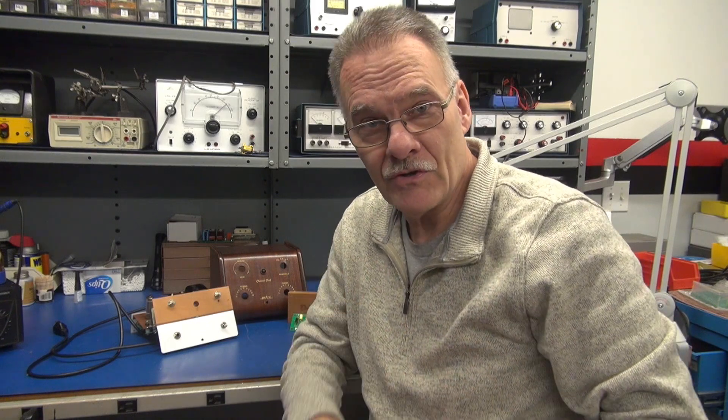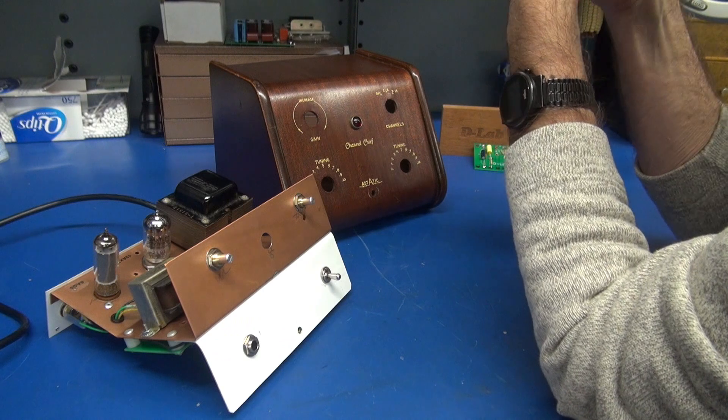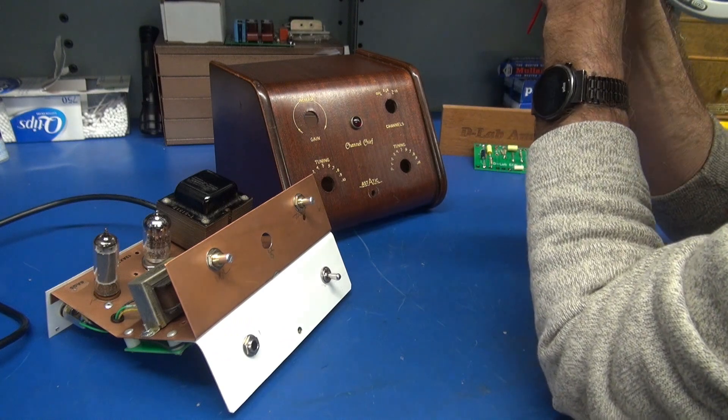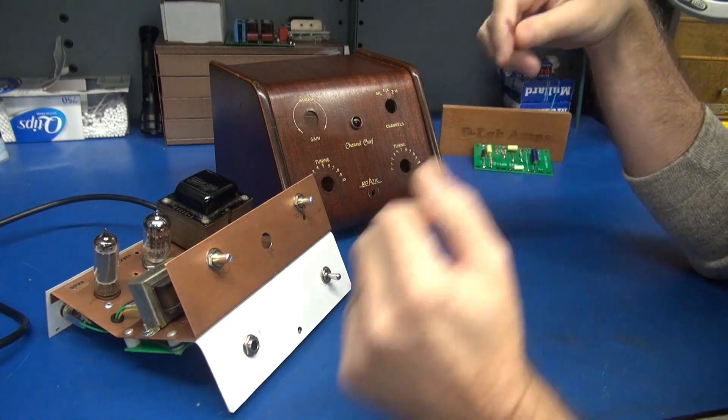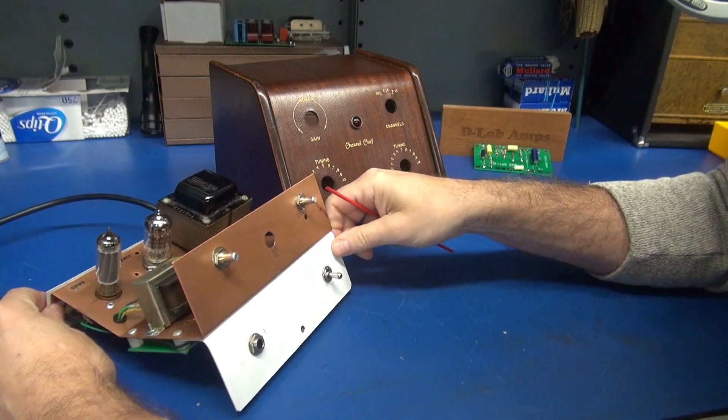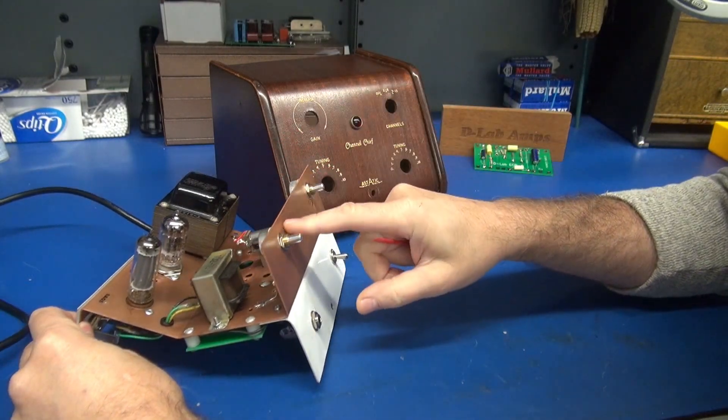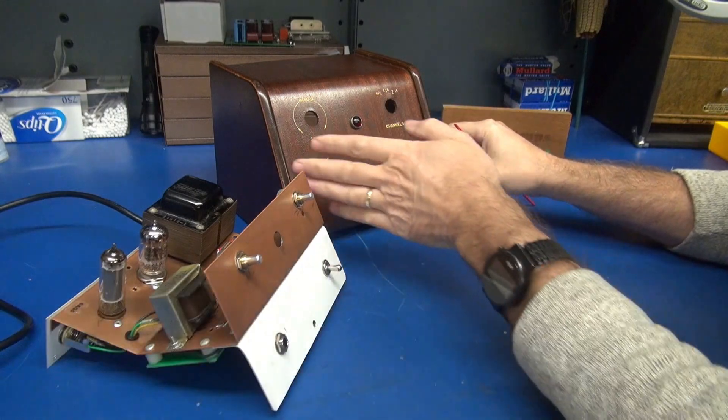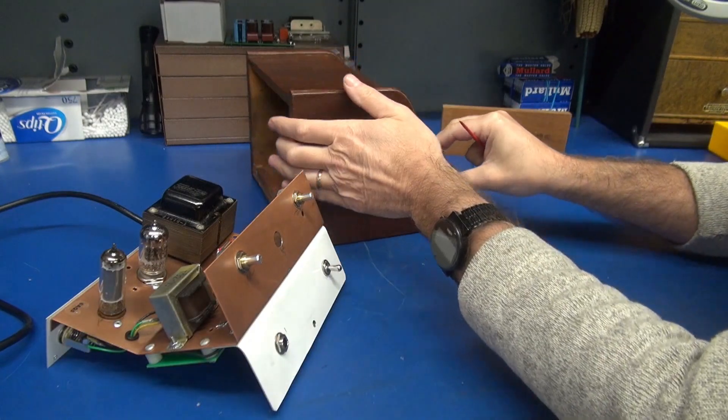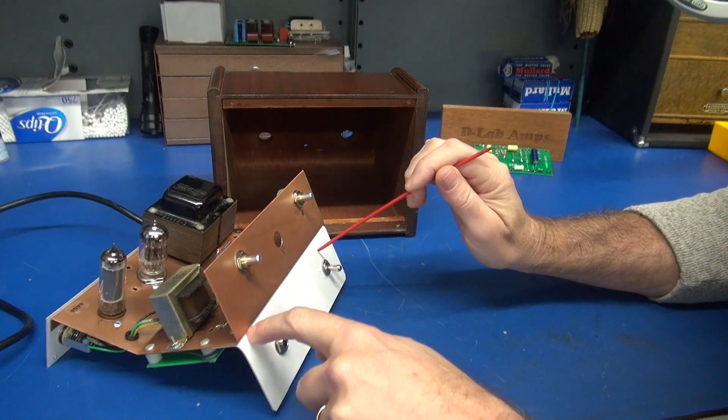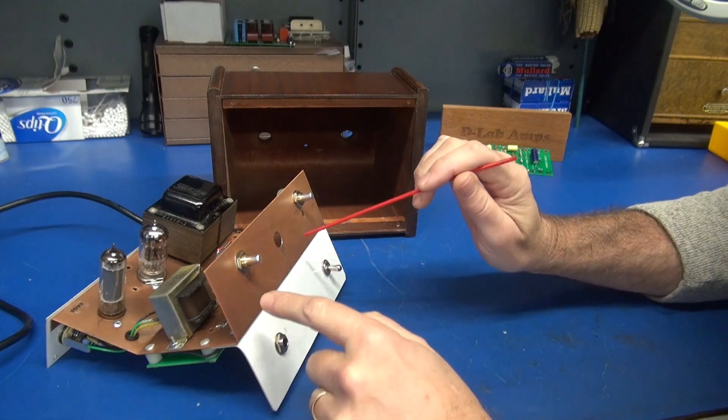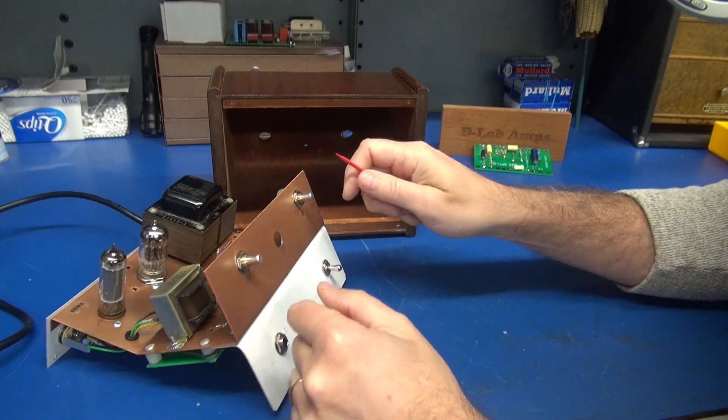All right, let's get into the project. Let's first start out with the mechanical layout of the little amplifier project. This copper chassis that you see is the original chassis that was in this wood cabinet. Originally, it stopped here. They had a support bracket, and there was tuning capacitors here.